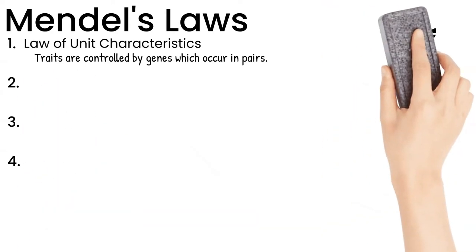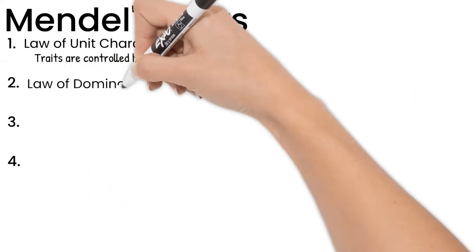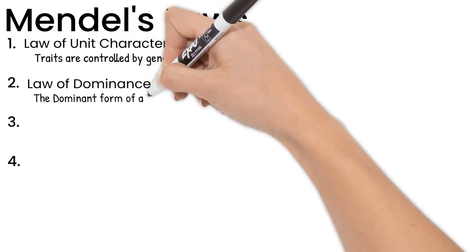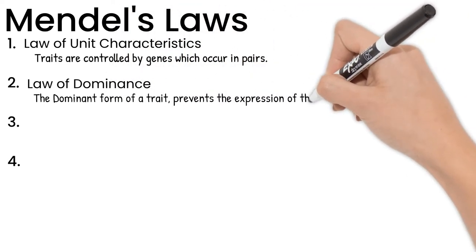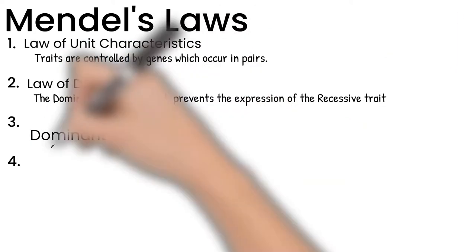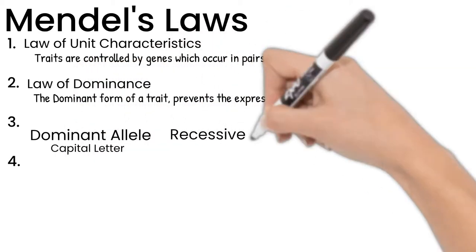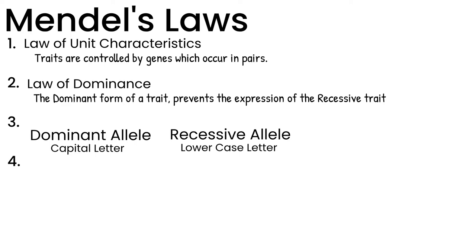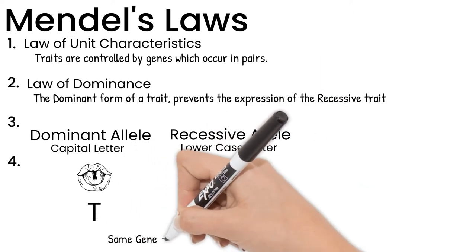That's where the law of dominance comes in. There are dominant and recessive alleles. The dominant form of a trait prevents the expression of the recessive trait — it overpowers it. To tell the difference, we write dominant alleles as a capital letter and recessive as lowercase. The tongue-rolling allele to roll is dominant, so we give it a capital T; not rolling is recessive, so lowercase t. It is the same gene, so we use the same letter.